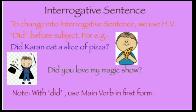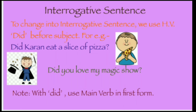For making an interrogative sentence, remember we always put the helping verb before the subject. The helping verb for past simple tense is 'did.' So the structure will be: Did + subject + first form of verb + object? For example: 'Did Karan eat a slice of pizza?' or 'Did you love my magic show?' Don't forget to put a question mark. With 'did,' always use the first form of the verb, as we have seen in negative sentences.